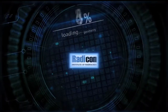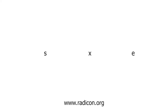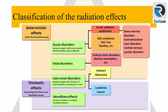You are watching ReadyCon. We will discuss different types of biological effects of ionizing radiation. The most common way to describe radiation effects is deterministic effects and stochastic effects.